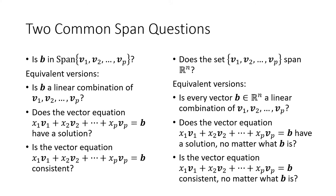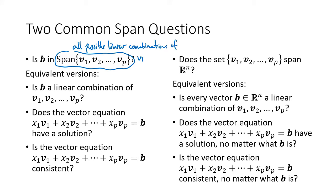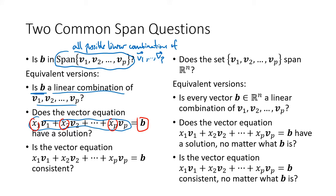In those lectures we talked about two common types of questions. The question on the left asks: is a given vector b in the span of some given vectors v1 through vp? The span of v1 through vp is all possible linear combinations of those vectors. The question is asking whether b is one of those linear combinations — is it possible to construct a linear combination with scalars x1, x2 through xp that works out to be b? That's a question we can solve using an augmented matrix.